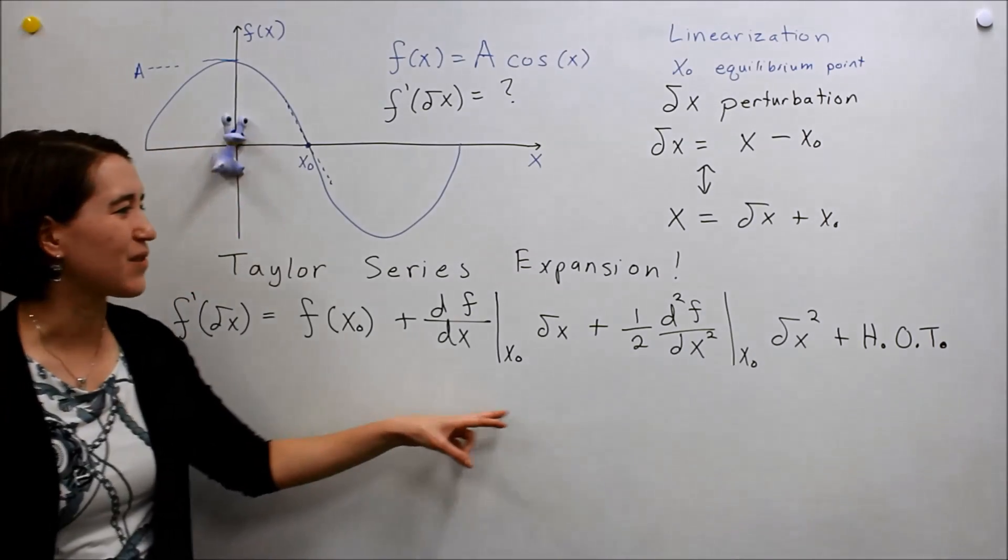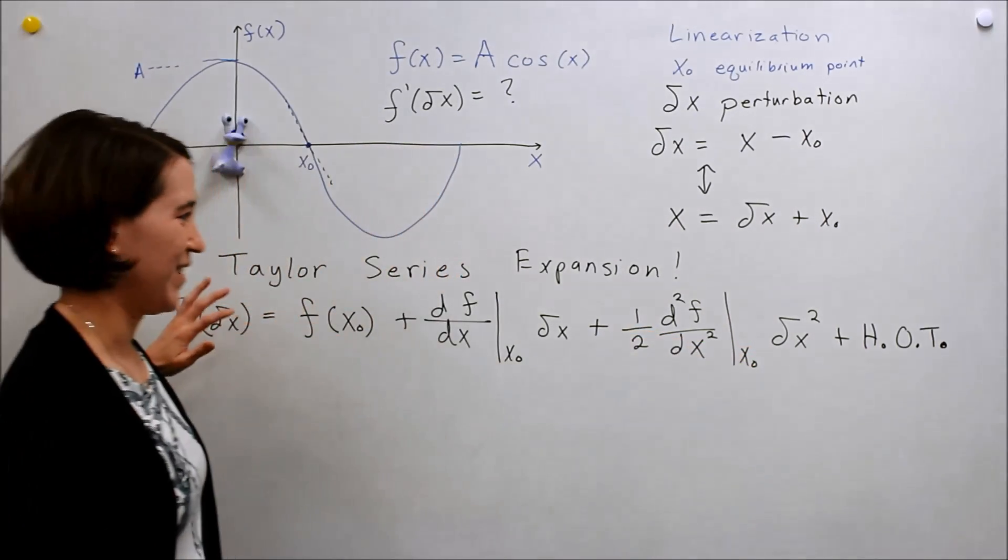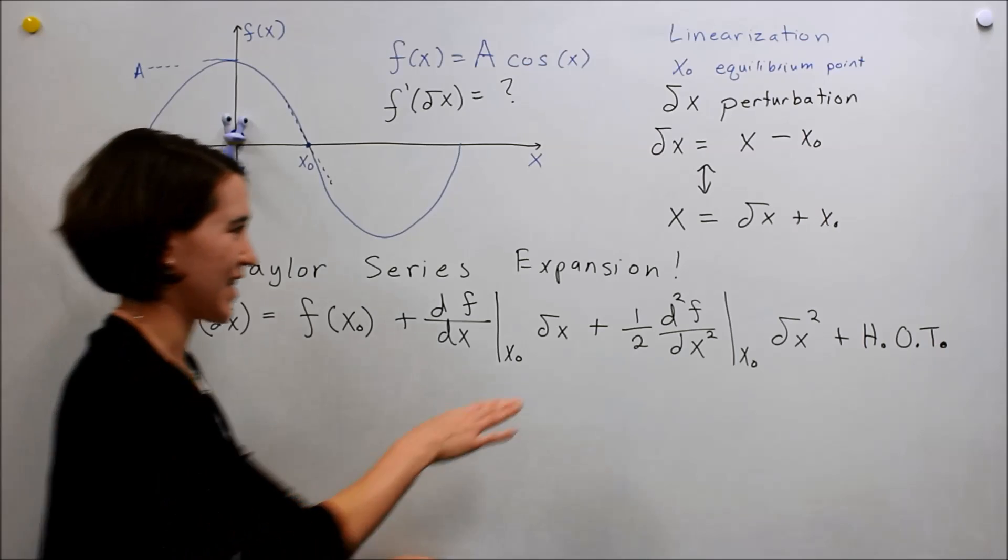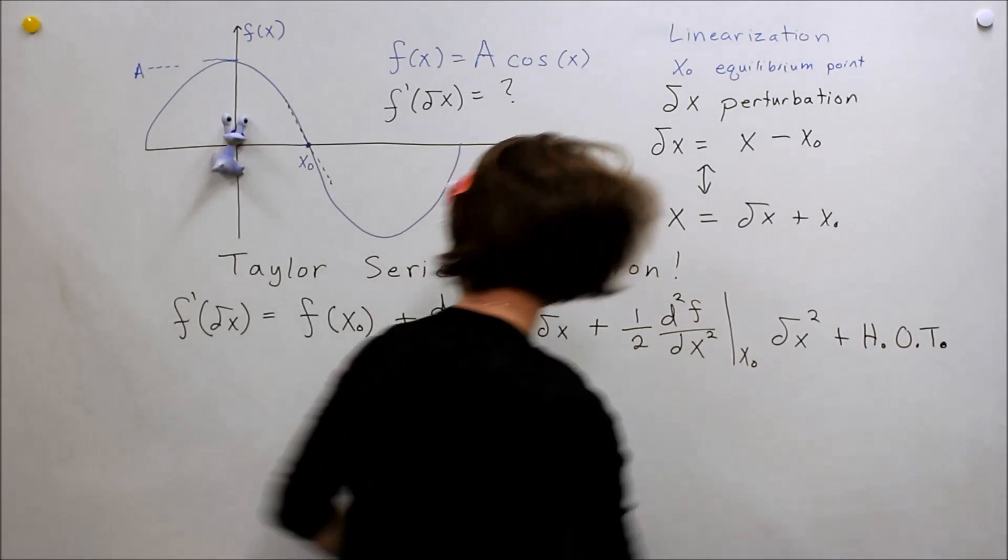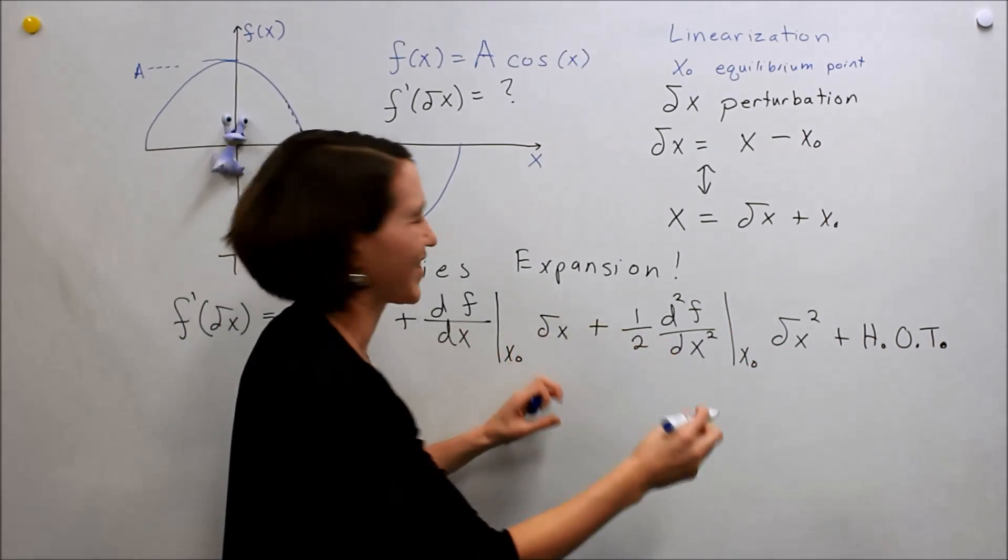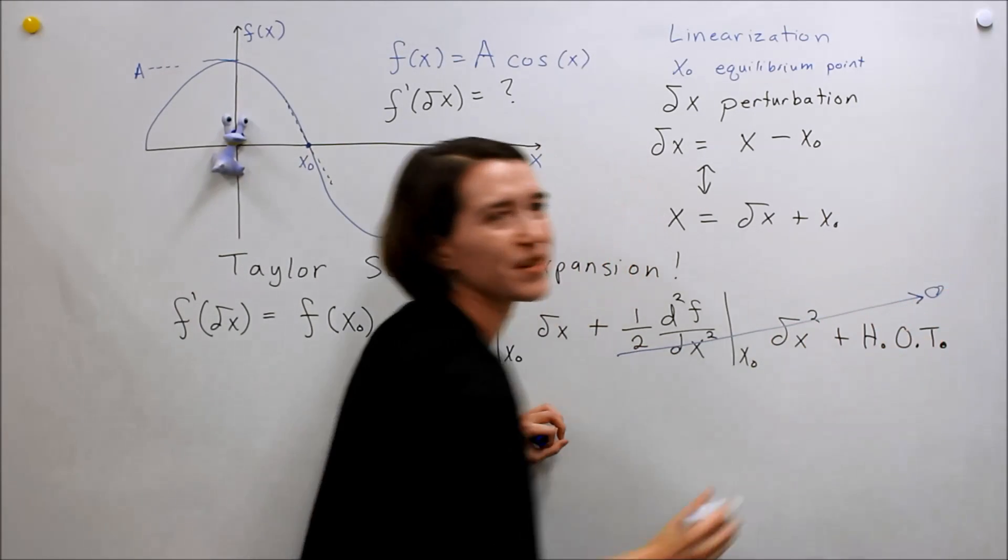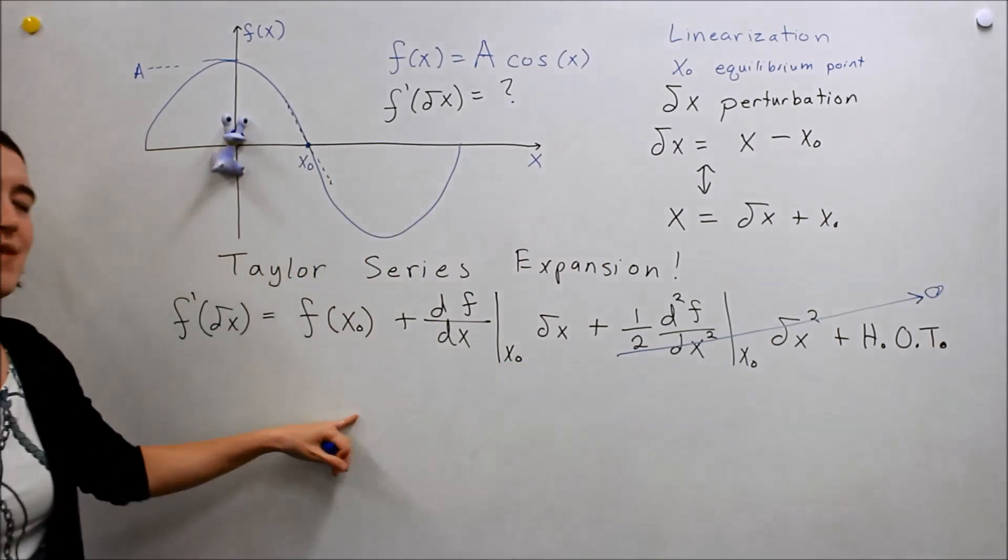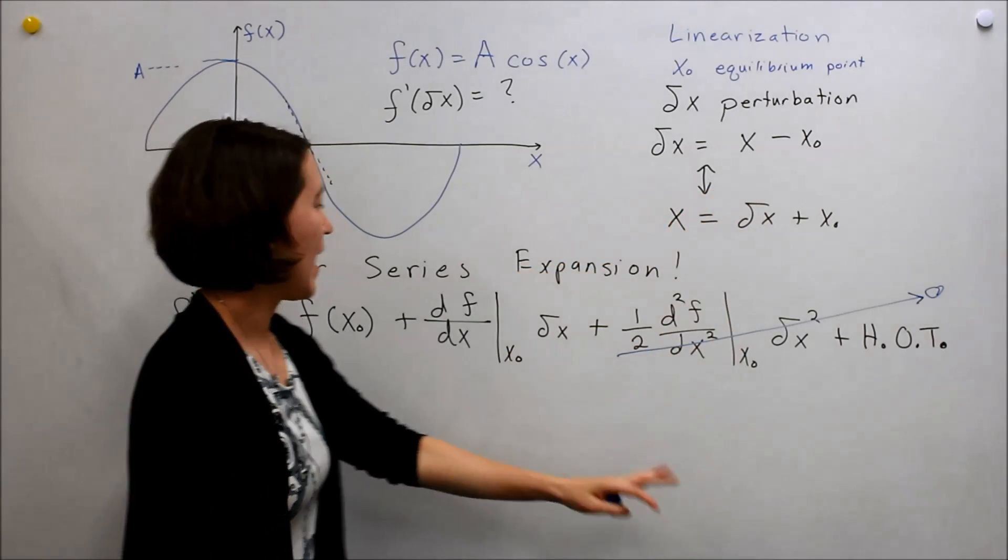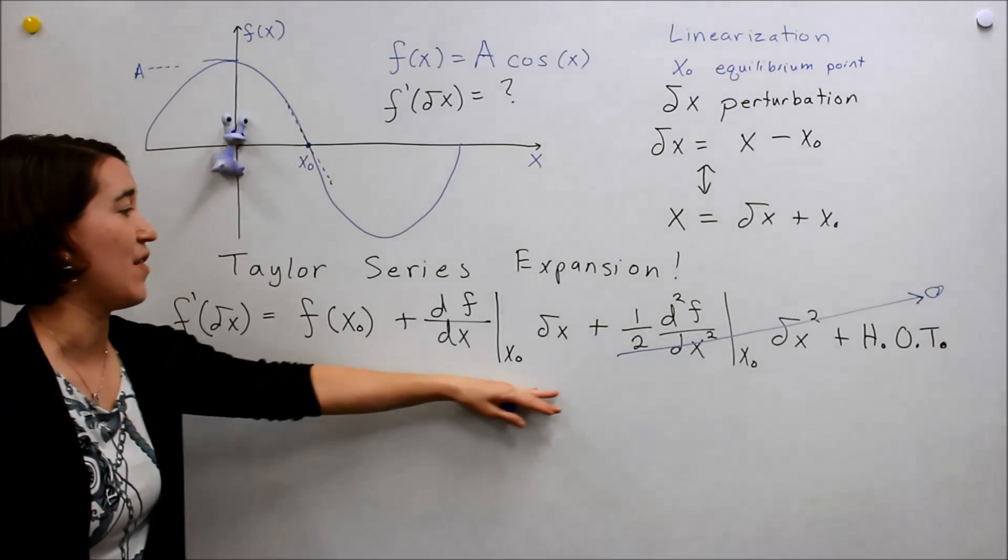I always thought it was fun that we get to write HOT in our equation. But we do not like these HOT terms over here. So our higher order terms we just assume they're zero. They're not affecting our system that much so we just ignore them. And then we can focus just on this equation.